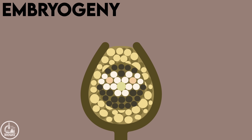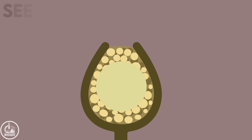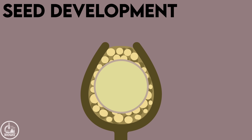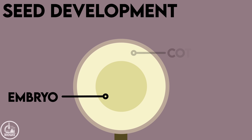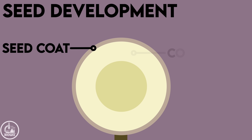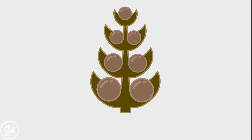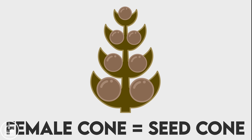The haploid male and female gametes fuse, resulting in the formation of a diploid zygote by fertilization. The zygote then divides mitotically and develops into an embryo. The ovule gets developed into a seed which contains the embryo and cotyledon covered inside the protective seed coat. As the female cone ultimately produces seeds, it is also called the seed cone.